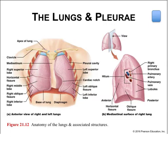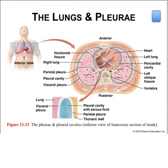Each bronchopulmonary segment is further split into dime-sized hexagonal structures known as lobules. Each lung is found within a pleural cavity, a subdivision of the thoracic cavity, located between two layers of serous membrane. The parietal pleura is the outer layer of the serous membrane fused to the ribcage, diaphragm, and local structures. At the hilum, the parietal pleura turns over on itself to create an inner layer called the visceral pleura. The visceral layer is continuous with the surface of the lungs and dives into fissures between the lobes. The pleural membranes secrete a thin layer of serous fluid called pleural fluid that fills the space between the layers and lubricates the delicate surfaces of the lungs as they expand and contract during ventilation.